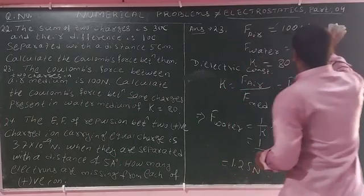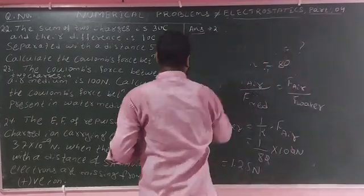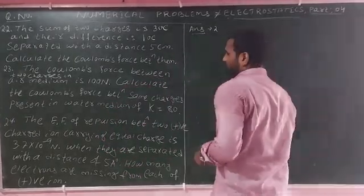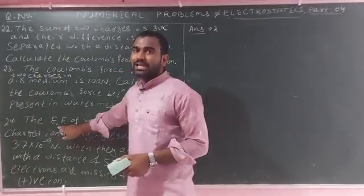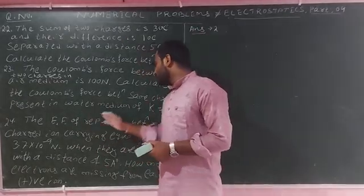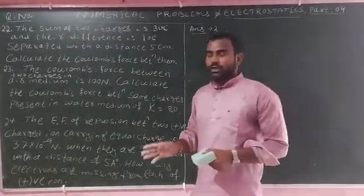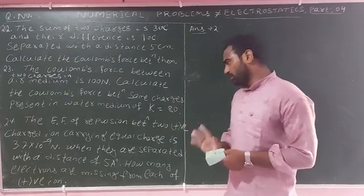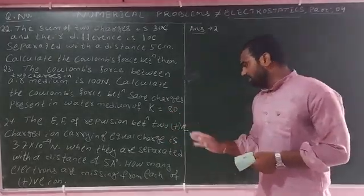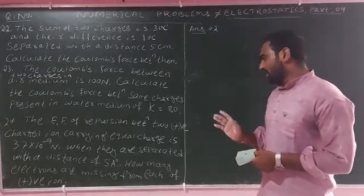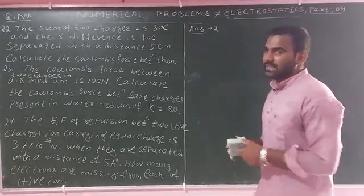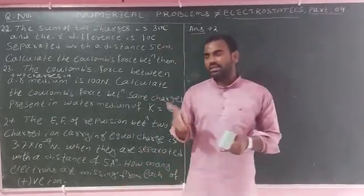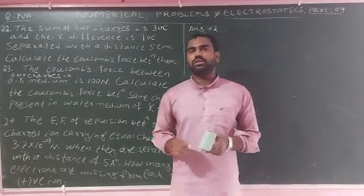Now question number 24: The electrostatic force of repulsion between two positive charged ions carrying equal charges is 3.7 times 10 to the power minus 9 newtons, when they are separated by a distance of 5 angstroms. How many electrons are missing from each positive ion? This problem is NCERT-based and also appears in state board and HC Verma.